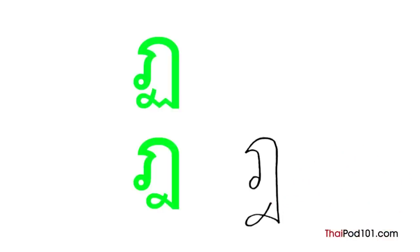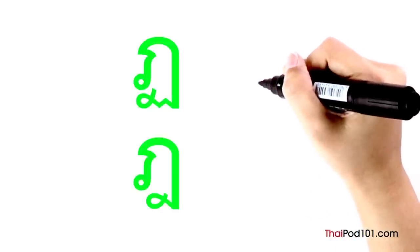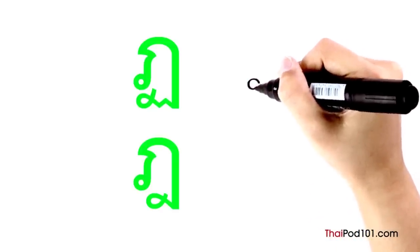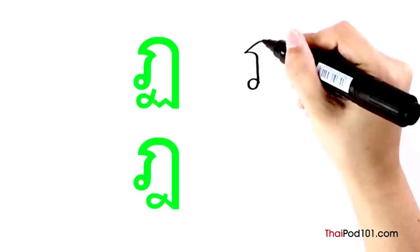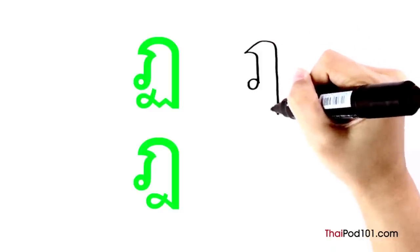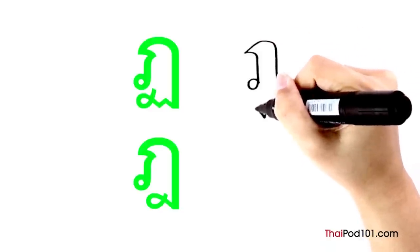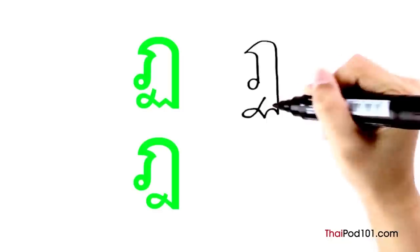Now let's do TOR PATAK. Start with a counterclockwise head on the bottom, then make the shape of GOR GAY. Extend the line on the right below the head, then make one bump in the line going to the left before the loop.